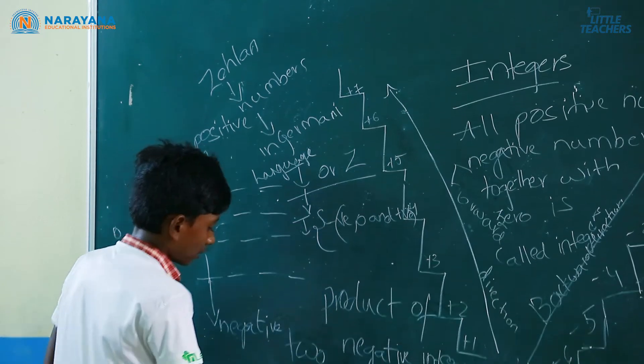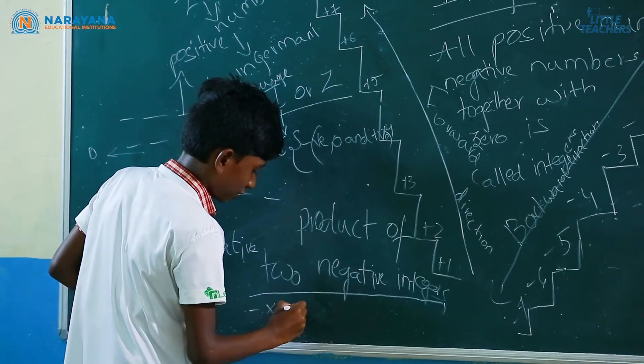The product of 2 numbers: minus into minus is equals to plus.